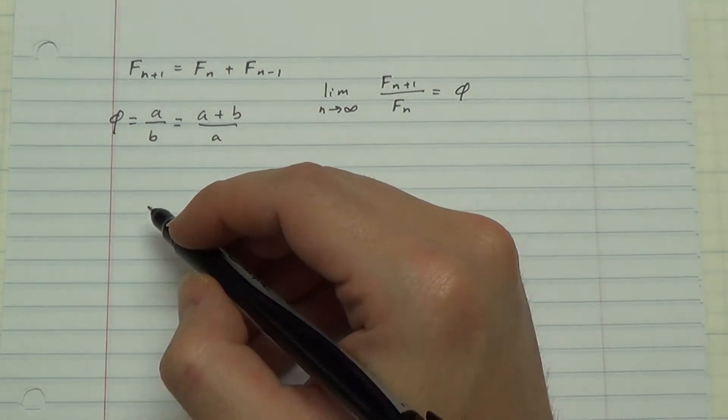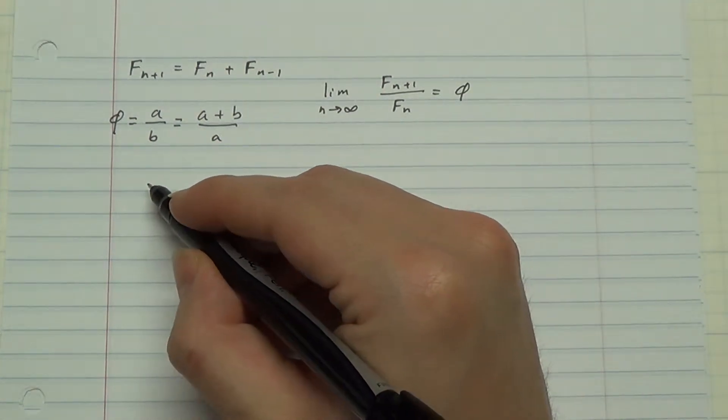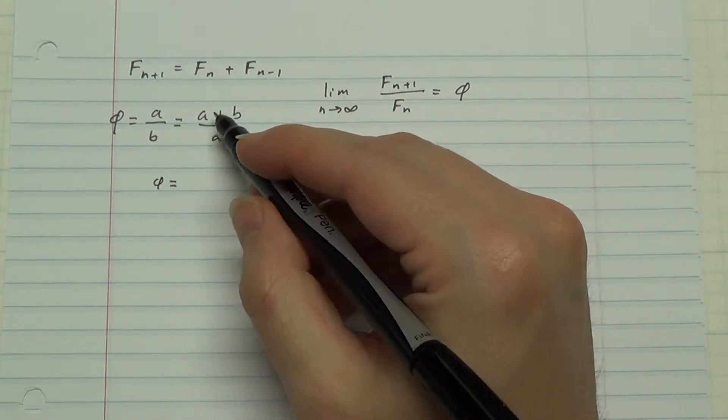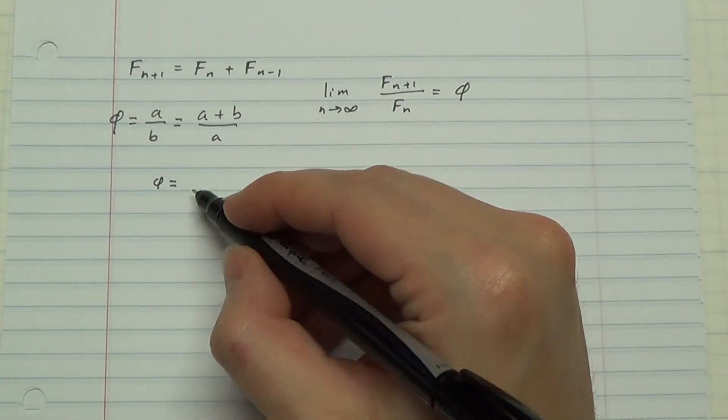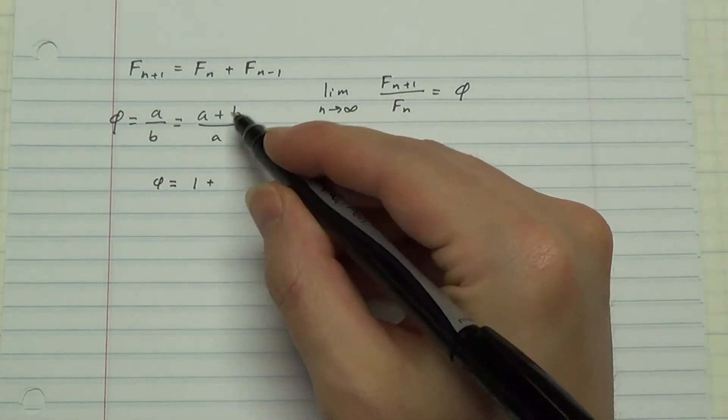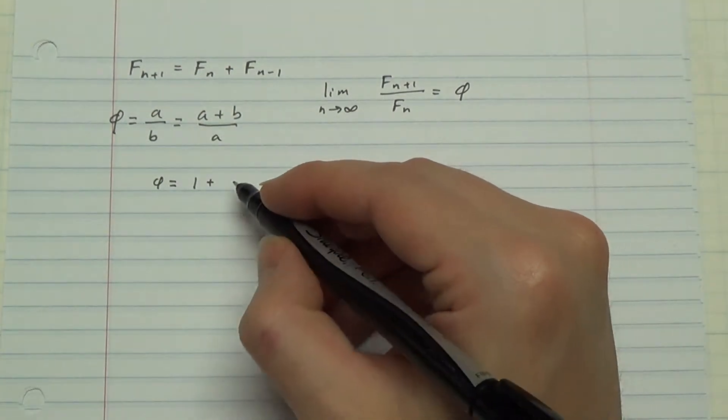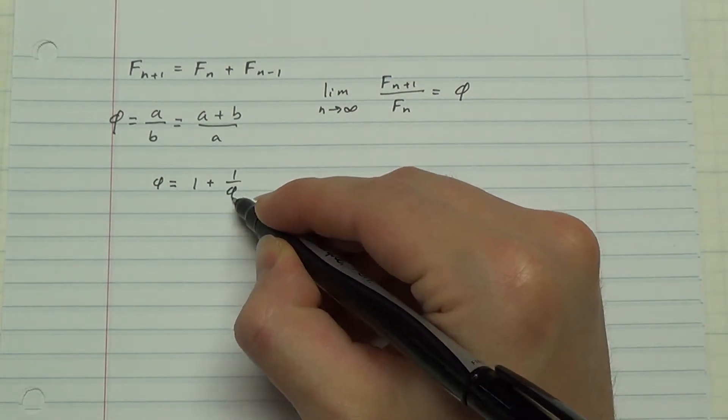First, I'm going to solve for phi. So phi is equal to, breaking this fraction up, we have a over a is 1, b over a is the reciprocal of phi, 1 over phi.